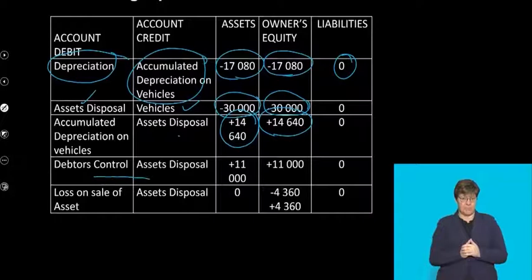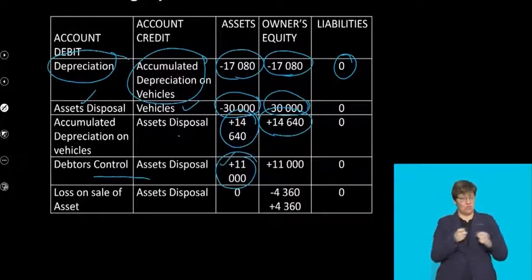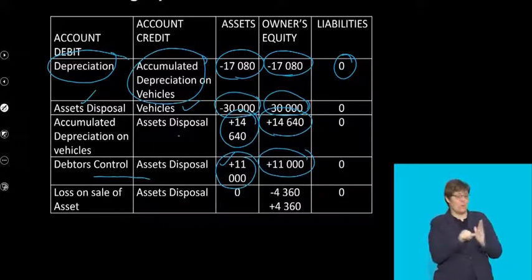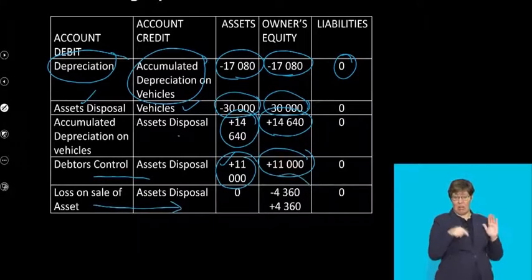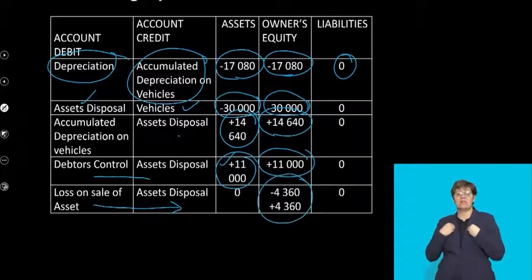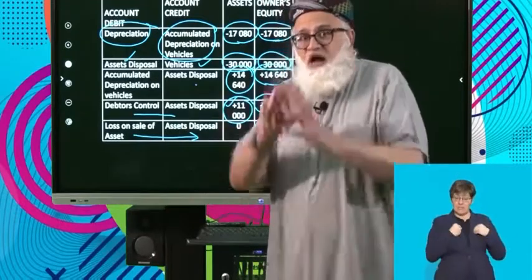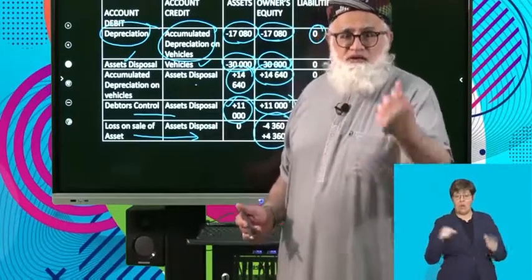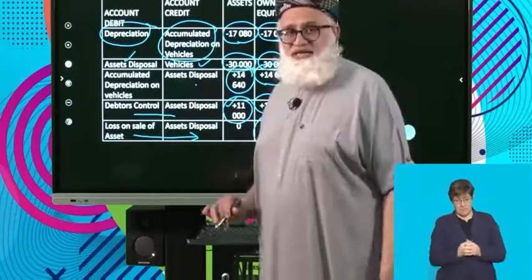Treat Asset Disposal as a nominal account: when you debit it, it decreases owner's equity; when you credit it, it increases owner's equity. Here's the asset being sold — debtors control is an asset increasing your assets, and crediting Asset Disposal increases owner's equity. Because there was a loss on sale of asset in this example, your owner's equity will increase and decrease by that amount. Your Asset Disposal account closes off, and you debit a loss on sale of asset account, meaning you've made a loss on disposal of that asset.